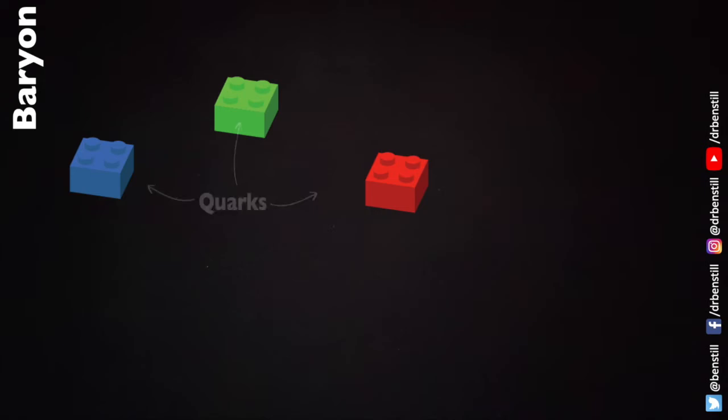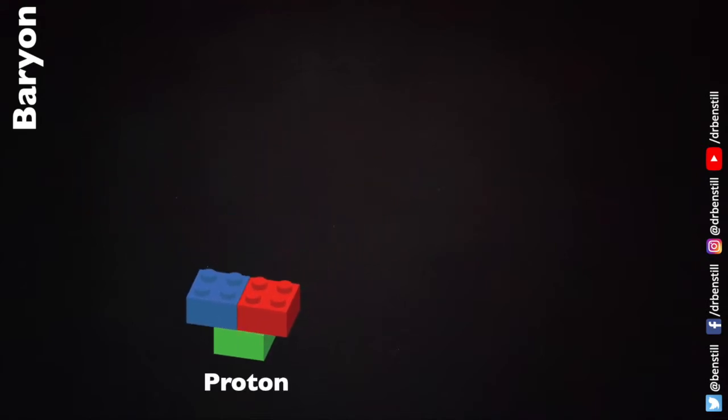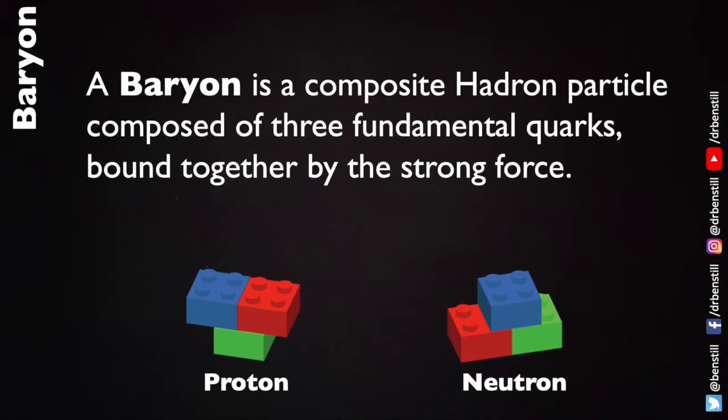A baryon is a particle which is made from quarks. Any baryon is made from three quarks such as a proton which is made from two up quarks and one down quark or a neutron made from two down quarks and one up quark. A baryon is defined as any particle that is made up of three quarks bound together by the strong force.